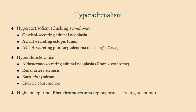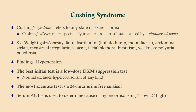We're going to talk about hypercortisolism and hyperaldosteronism, saving high epinephrine for its own talk. Hypercortisolism is classically described as Cushing syndrome — that's not the same as Cushing disease. Any state of hypercortisolism is called Cushing syndrome, even if induced by taking large amounts of prednisone. Cushing disease refers specifically to excess cortisol caused by a pituitary adenoma.